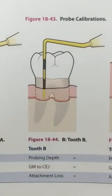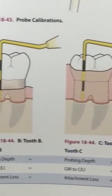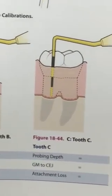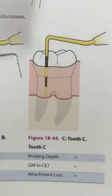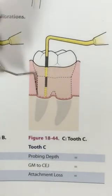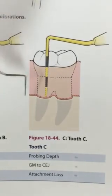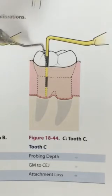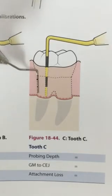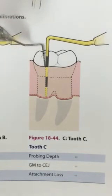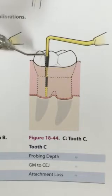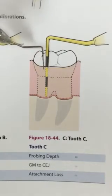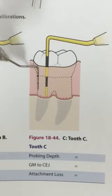In the case of inflammation, we're still wanting to measure just from the CEJ to the epithelial attachment. So we're going to take the probe depth, and then you're going to have to gently take your probe and feel down to the CEJ, and then subtract that number from the probe depth.